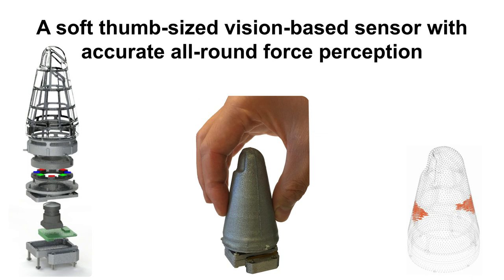In this paper we introduce a new soft haptic sensor that uses vision and learning to accurately estimate where and how it's being contacted. We designed the sensor with dextrous manipulation devices in mind.